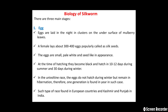There are three main stages in the life cycle of silkworm. The first one is the egg. Eggs are laid at night in clusters on the underside of mulberry leaves, and the female lays about 300 to 400 eggs, popularly called silk seeds. The eggs are small, pale white, and seed-like in appearance. At the time of hatching, they become black and hatch in 10 to 12 days during summer and 30 days during winter.